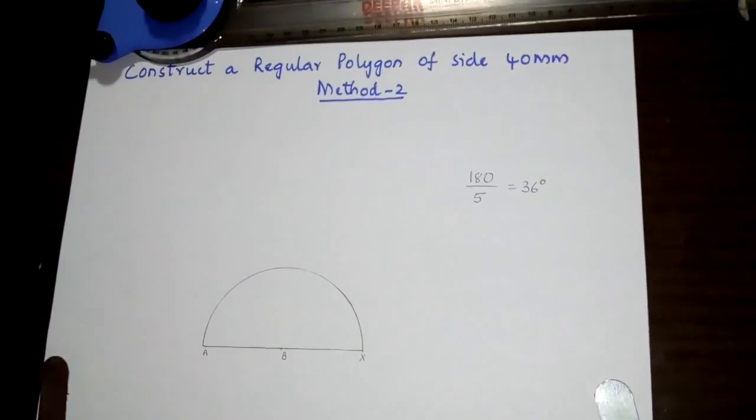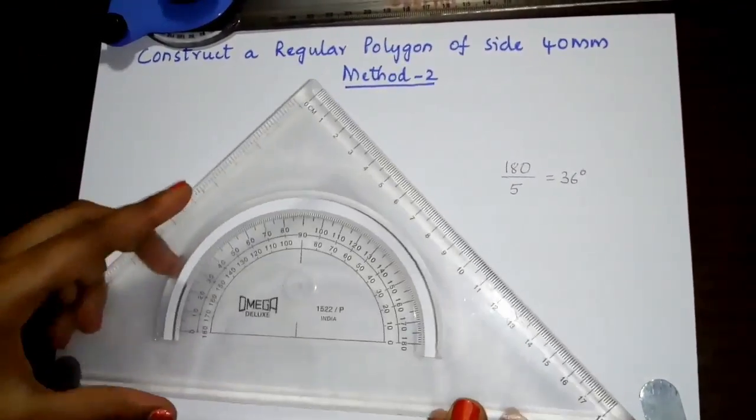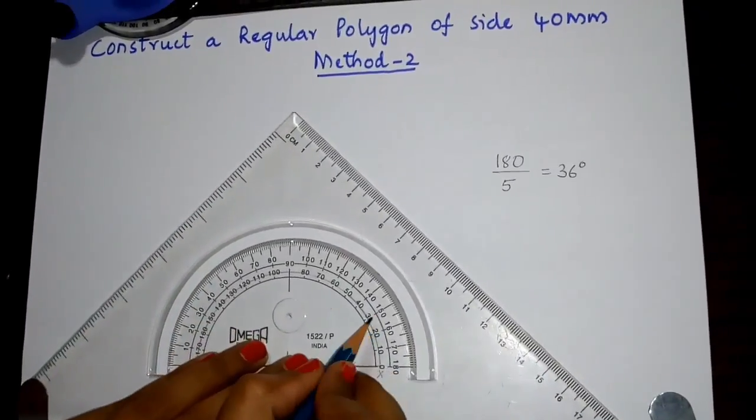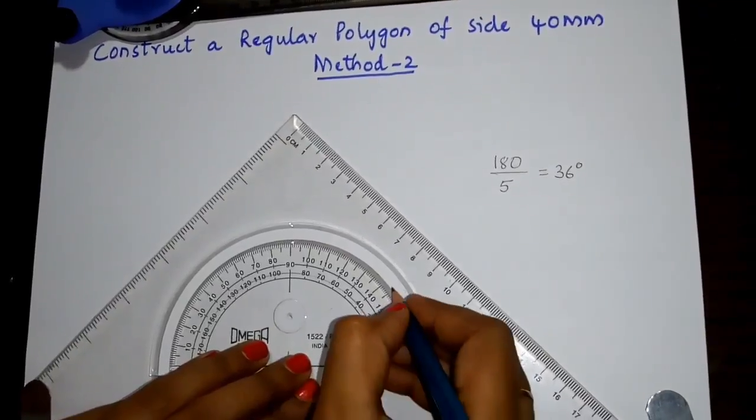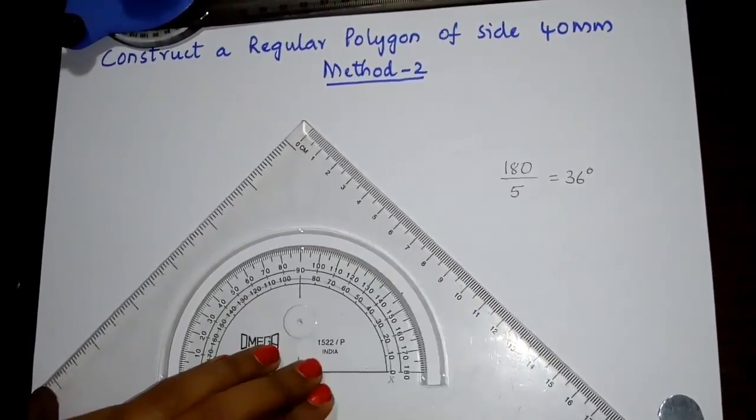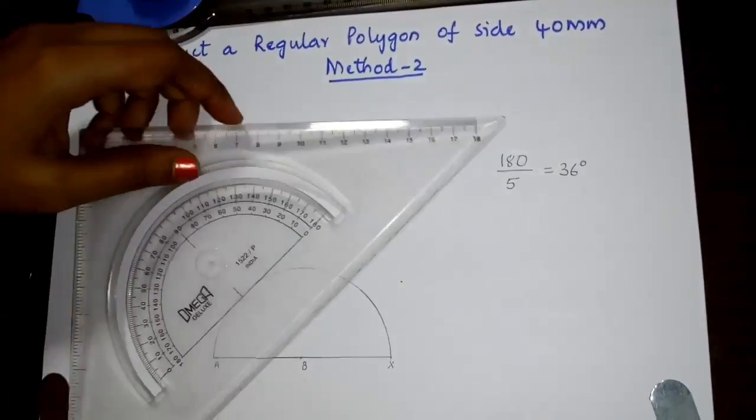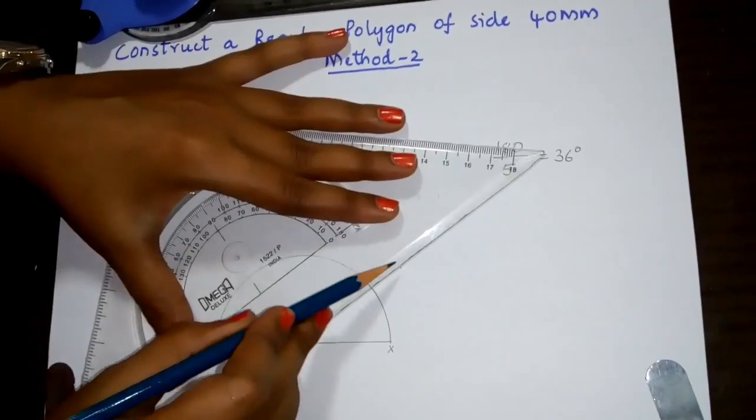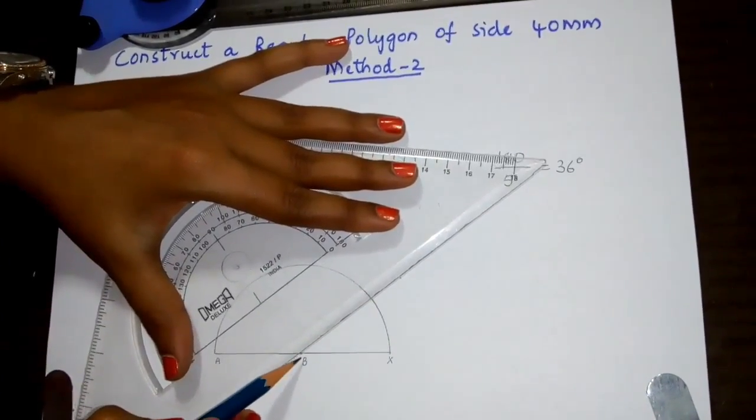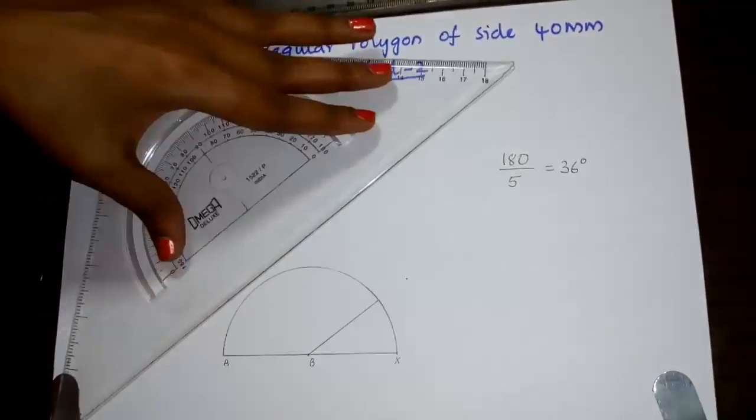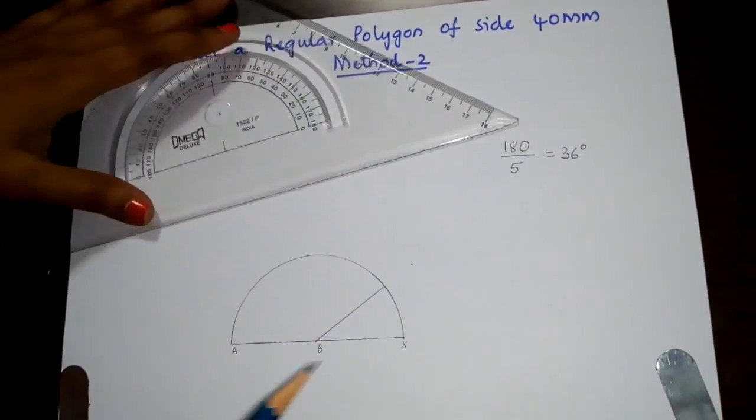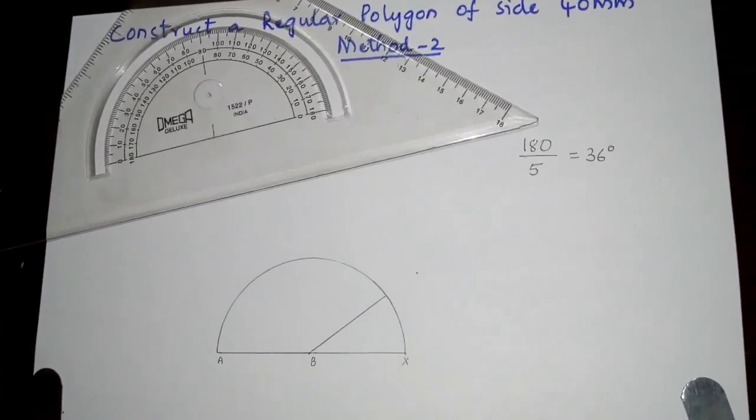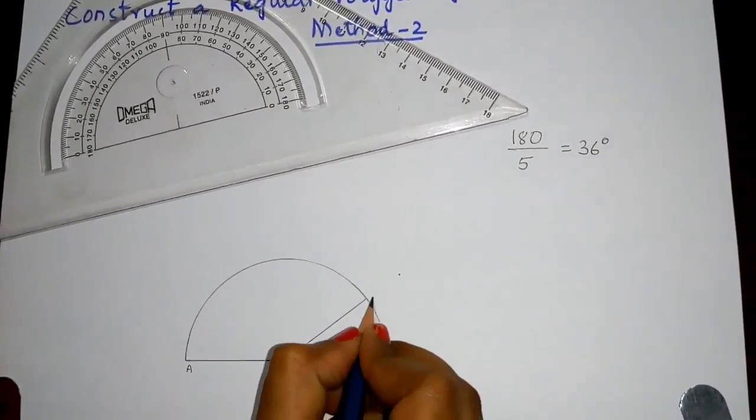For this, I will use a protractor and place the protractor center at point B and mark the value 36 degrees. Draw a line from B to the marked point. Now we have divided the semicircle into 1 part. For dividing into 5 parts, we will measure this value. Mark this point as 1.